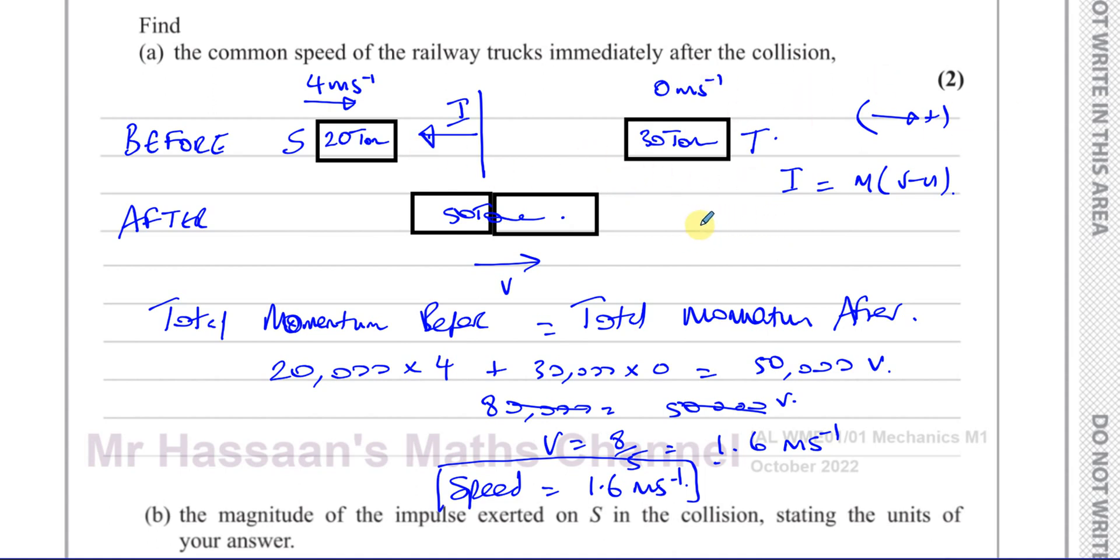And you can say that the impulse we know for T is if we take this direction as positive, would have been 48,000 in this direction, equals its mass, which is 30,000, times the final velocity, which we have to find, minus its initial velocity, which was zero. So that should give us the same answer, 48,000 divided by 30,000, which gives us, that's going to be 1.6.